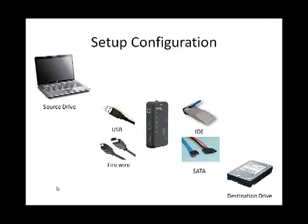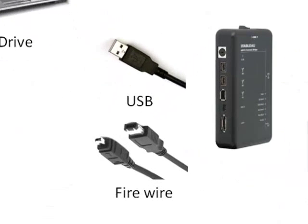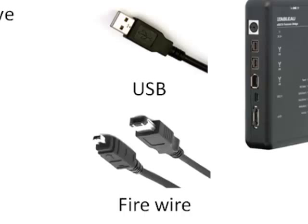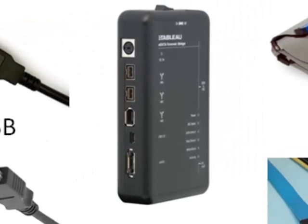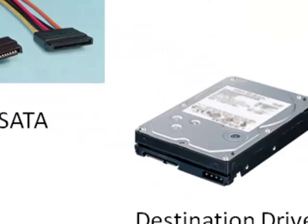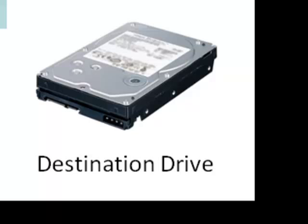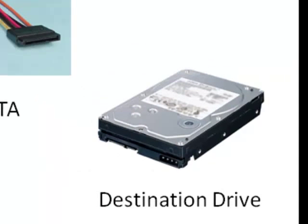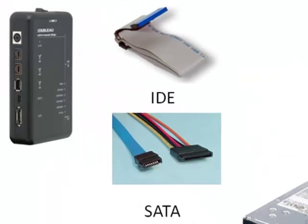The source drive is connected to a USB or firewire data connection, which is then connected to the write blocker. From the destination drive to the write blocker on the other side, an IDE or SATA connection is required.